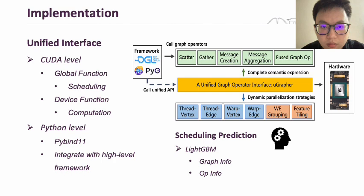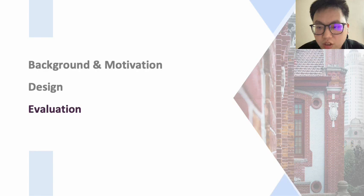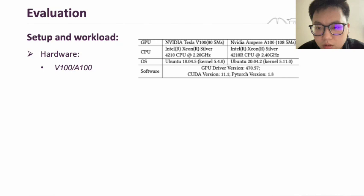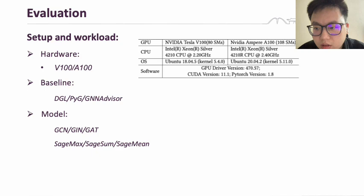In the next section, we will introduce our evaluation. We evaluated UGraph using two hardware platforms: V100 and A100 GPU. We compare UGraph with DGL, PyG, and GNNAdvisor on four GNN models: GCN, GIN, GAT, and GraphSage. We also evaluated different versions of the GraphSage module that use Max, Sum, and Min aggregators. In addition, we used 15 real-world graph datasets as our evaluation benchmarks.